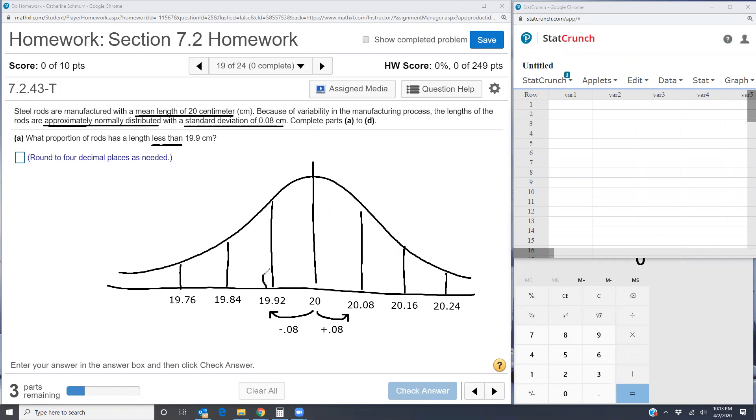Less than means to the left of 19.9 and 19.9 would be just to the left of 19.92. So I would draw it in right there. And then I would shade to the left of that. So I'm looking for the area to the left of 19.9.